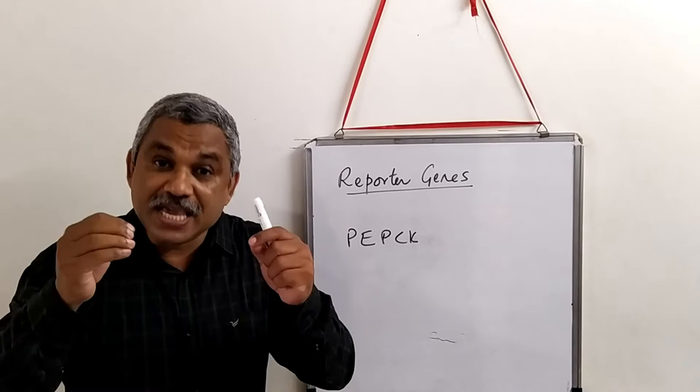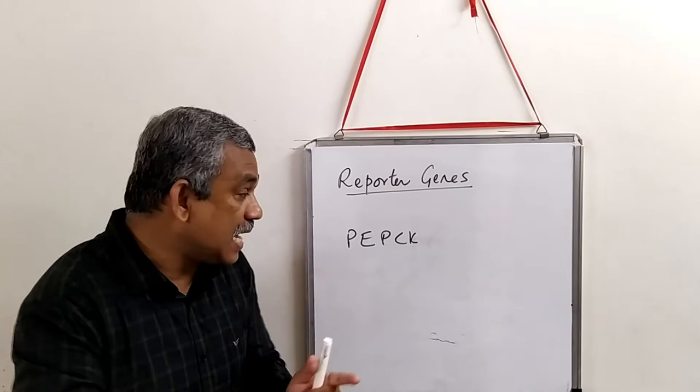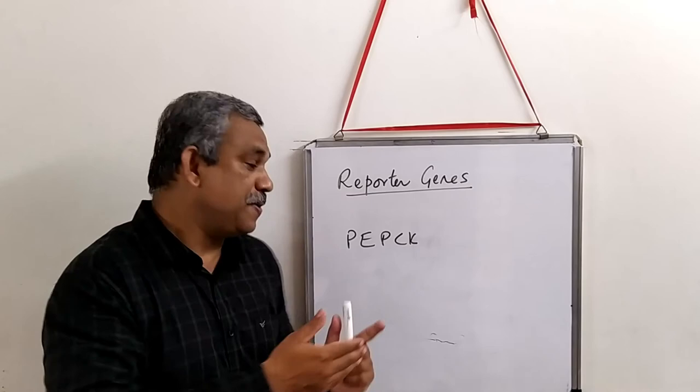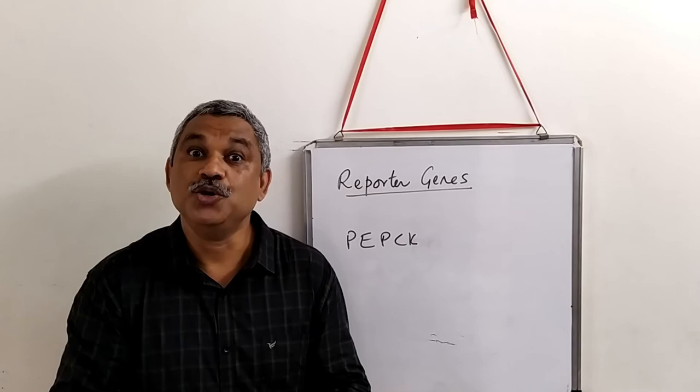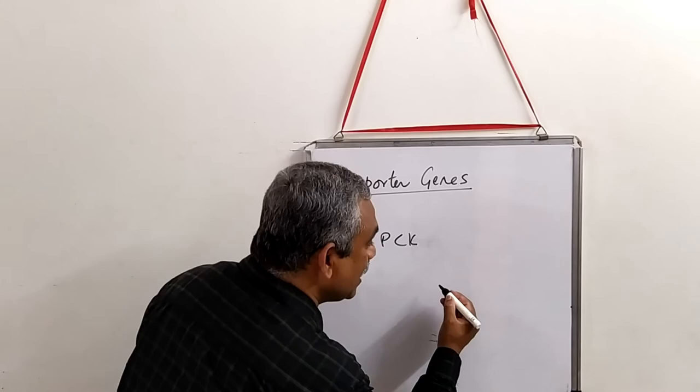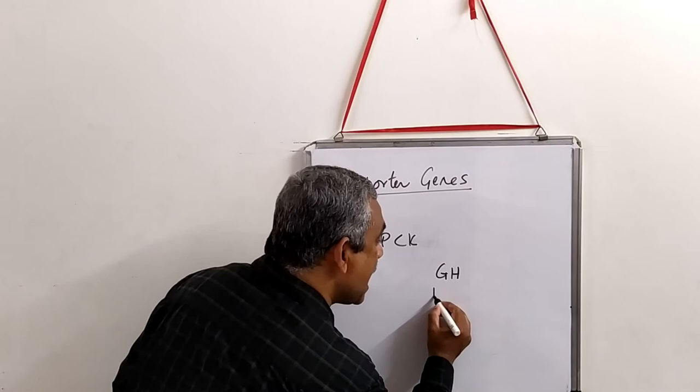The result arising from PEPCK, carboxykinase, cannot be detected from blood. But what can be detected in blood is growth hormone. So the growth hormone can be detected from blood.